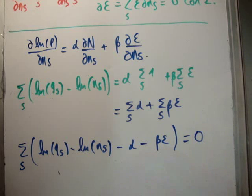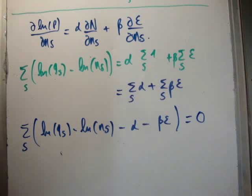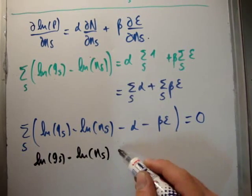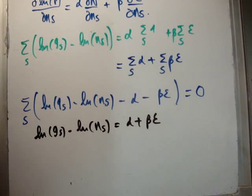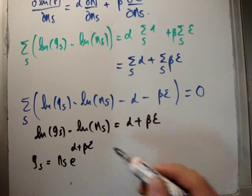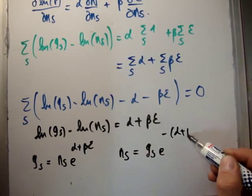Since all s values are arbitrary and we choose alpha and beta to satisfy the two constraints, we say that log g sub s minus log n sub s equals alpha plus beta epsilon. Rearranging and exponentiating, we get g sub s equals n sub s times e to the alpha plus beta epsilon, or equivalently n sub s equals g sub s times e to the minus alpha plus beta epsilon.